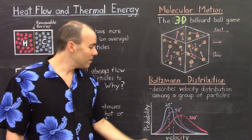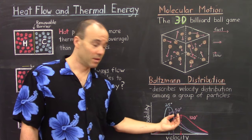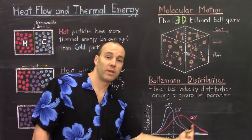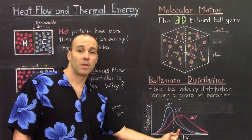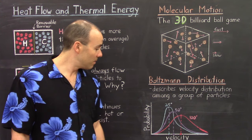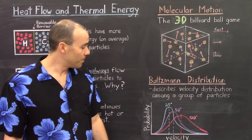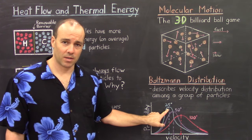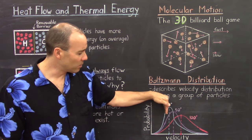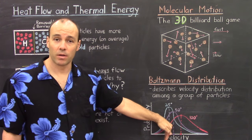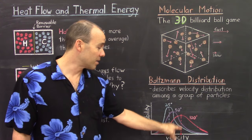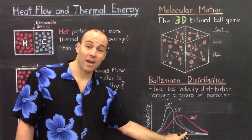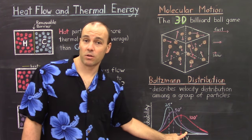Now, that's just the average particle. At any given temperature, you will have particles that are moving more quickly and some that are also moving more slowly. So even at 25 degrees Celsius, where the average particle velocity is much slower than the average particle velocity at 100 degrees Celsius, you do have a few particles that are moving more quickly.